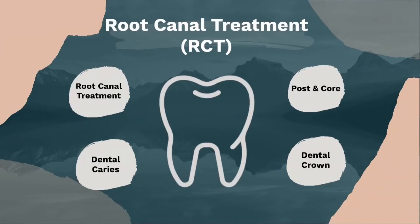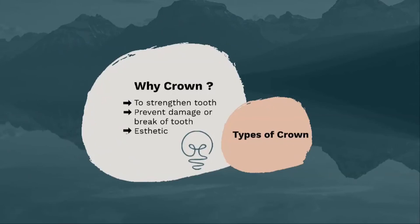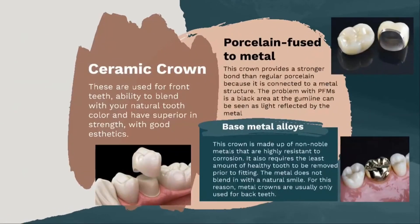The last part is the crown. Why do we need a crown? It is to strengthen the tooth, prevent damage or breakage, and for your beautiful smile. There are three main types of crown available: ceramic crown, porcelain fused to metal crown, and base metal alloy crown. Ceramic crowns are used for front teeth — they can blend with your tooth's colour, look nice, and are superior in strength. Porcelain fused to metal crowns provide stronger bond than regular porcelain because they are connected to a metal structure; the only problem is a dark area at the crown line can be seen as light is reflected by the metal. Lastly, base metal alloys are made from non-noble metals that are resistant to corrosion. They require the least amount of healthy tooth to be removed to fit the crown, but the colour doesn't match the natural tooth colour, so they are mainly used in back teeth.